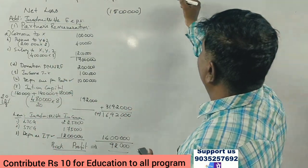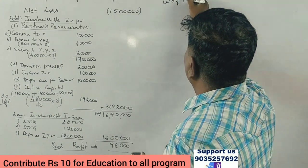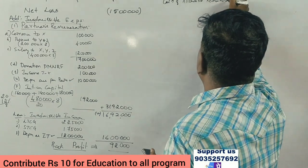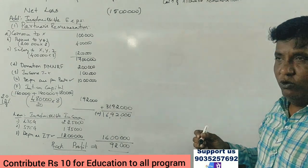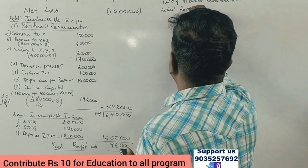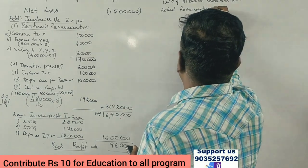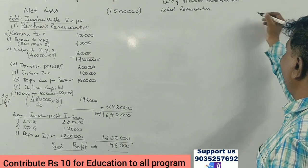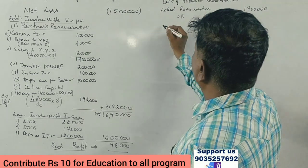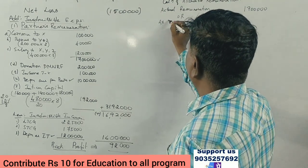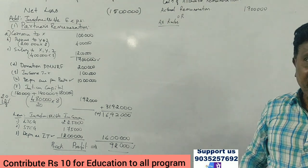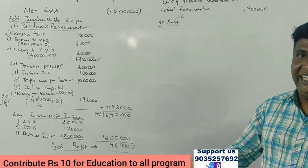The next step is the calculation of allowable remuneration. Actual remuneration paid to partners totals 17 lakh rupees. As per the rules, allowable remuneration is calculated based on the book profit in three slabs.